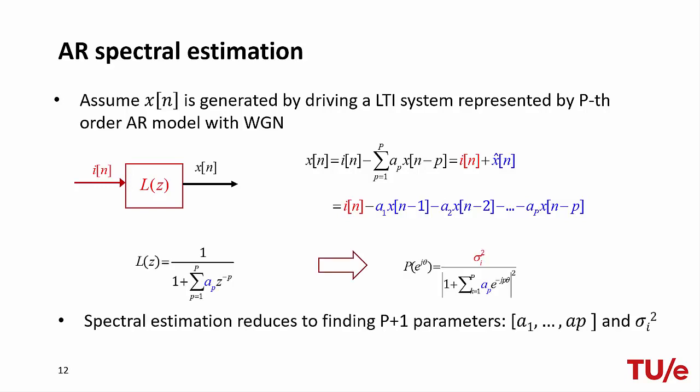The goal of autoregressive modeling is to find the parameters of the filter — that is, the filter coefficients a1, a2, and so on — and the variance of the input noise. Once we have these parameters, we can easily obtain the power spectral density using the known formula. By this formula, we can obtain an exact value of the power spectral density at any frequency theta, thus overcoming the limitations in spectral resolution.